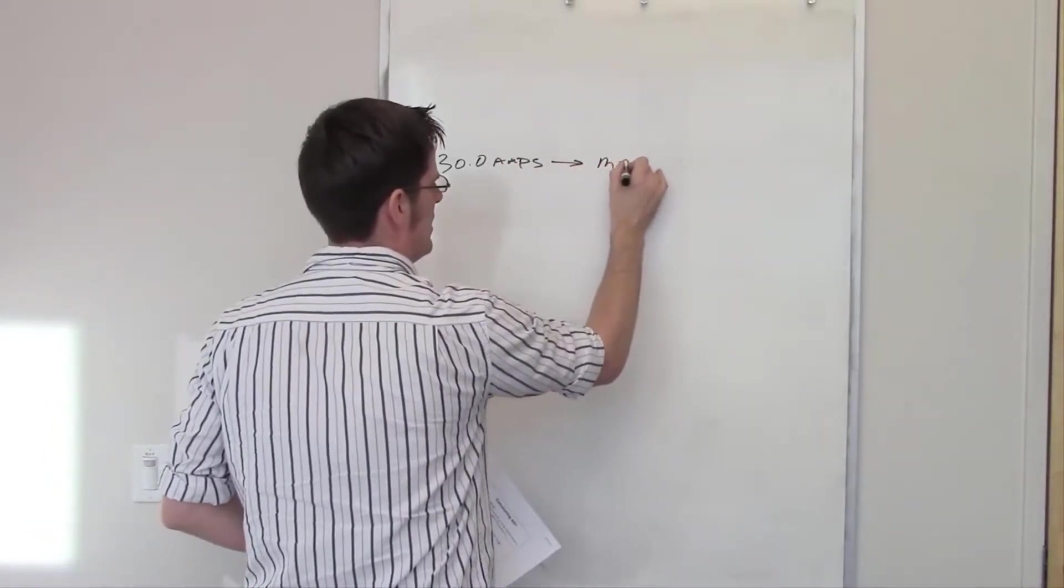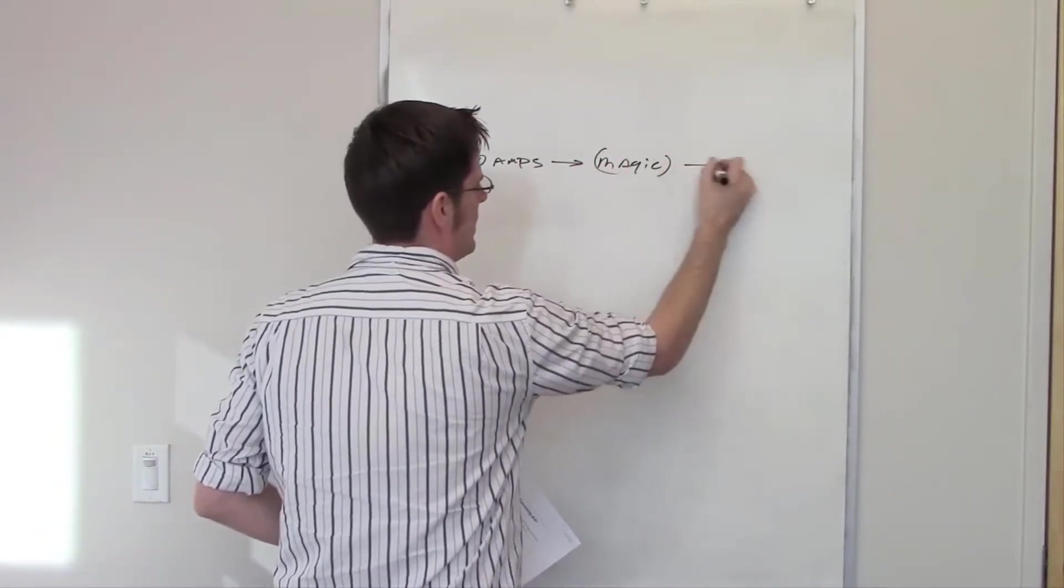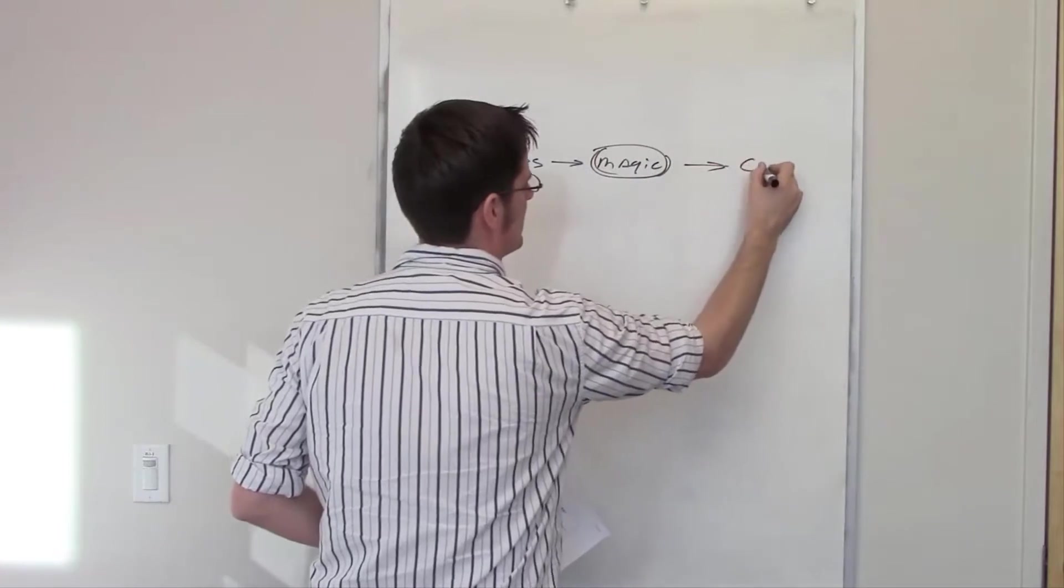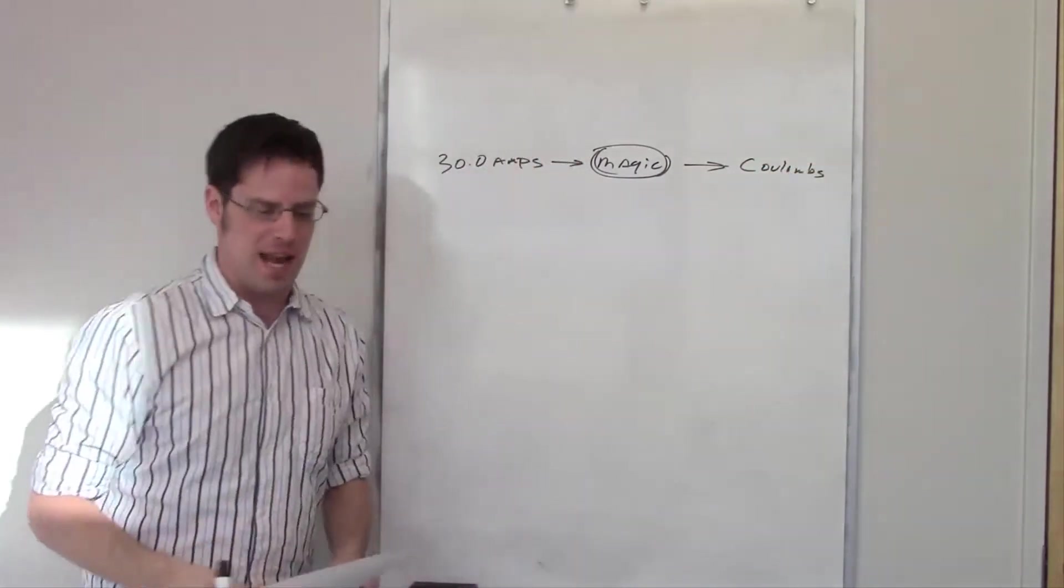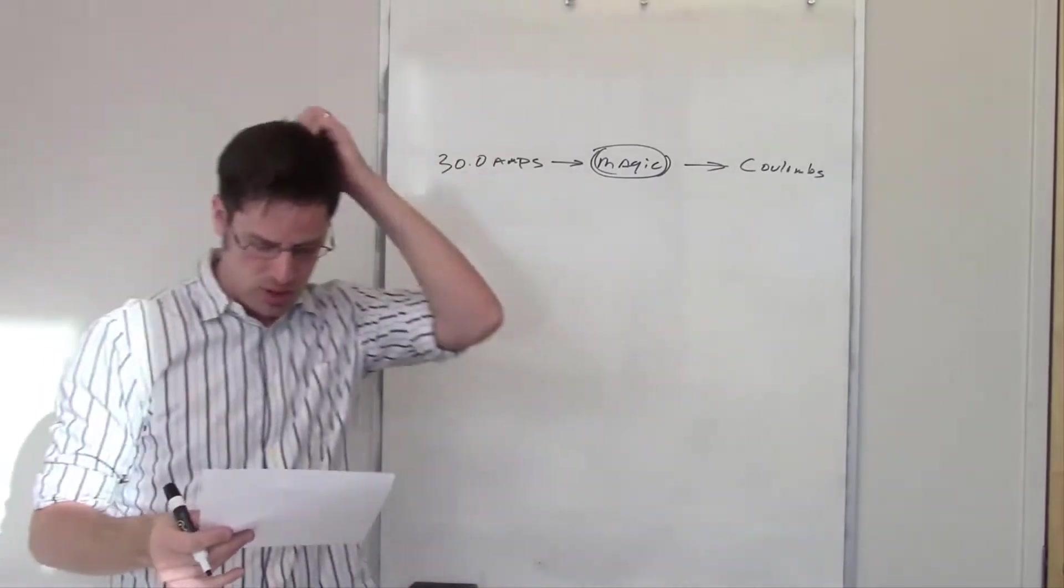So let's go to the board here. It tells me that I've got 30 amps, so I need to somehow change that into coulombs. I'm going to write down 'magic,' and then we go through the magic box and come out with some number of coulombs.